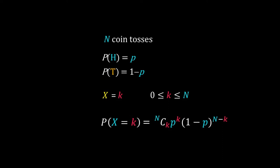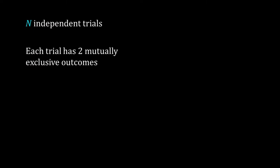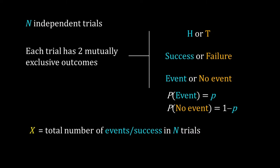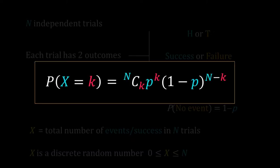Let's generalize further beyond coin toss. We have n independent trials, and each trial has two mutually exclusive outcomes — head or tail, success or failure, event or no event. The probability of one outcome is p and the other is (1 minus p). X is the total number of successes in n trials. Following the coin toss logic, the probability that X takes a value k equals n-choose-k times p to the power k times (1 minus p) to the power (n minus k).